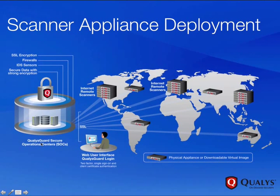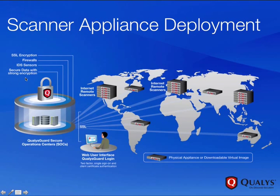This is our 10,000 foot view of what Qualys looks like. We'll start off here in the QualysGuard Secure Operations Center. This is where your scan data and map data are going to be securely housed. Here we have SSL encryption, firewalls, strong encryption, and IDS sensors protecting our information.